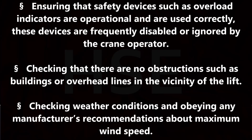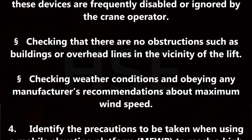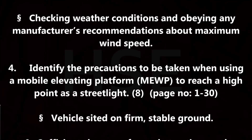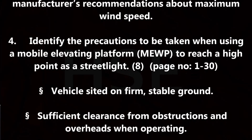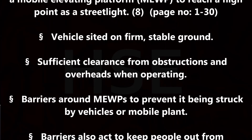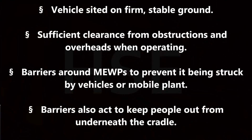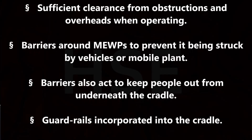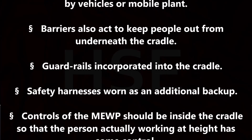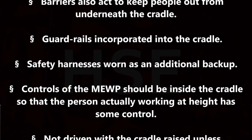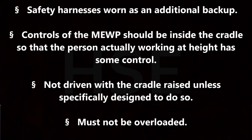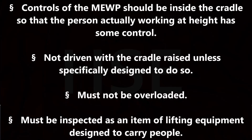Identify the precautions to be taken when using a mobile elevating work platform (MEWP) to reach a high point such as a streetlight. Vehicle sited on firm, stable ground. Sufficient clearance from obstructions and overheads when operating. Barriers around the MEWP to prevent it being struck by vehicles or mobile plant. Barriers also act to keep people out from underneath the cradle. Guard rails incorporated into the cradle. Safety harnesses worn as an additional backup. Controls of the MEWP should be inside the cradle so that the person working at height has some control. Not driven with the cradle raised unless specifically designed to do so. Must not be overloaded. Must be inspected as an item of lifting equipment — designed to carry people. Use restricted to trained, authorized staff only.